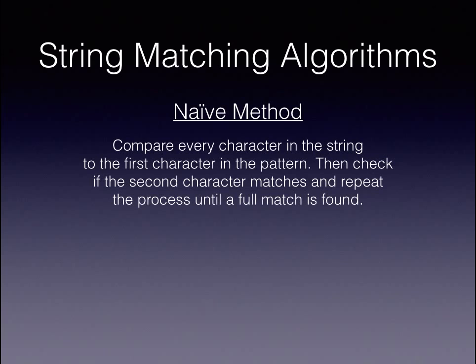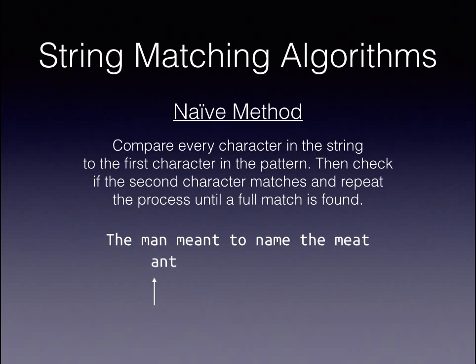Let's look at an example. We start by comparing the letter A to each character until we find a match. Then we compare the letter N and T. The T does not match, so we resume looking for the letter A until we find it. We find an N and a T, and so we know we've found the string.